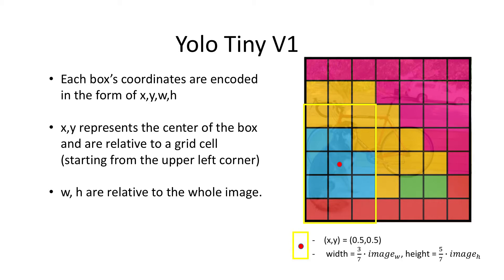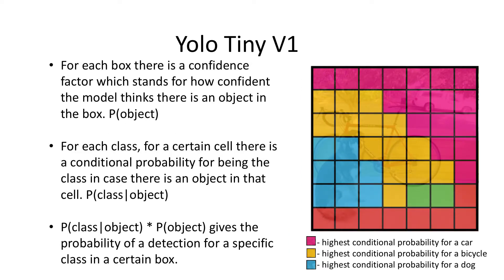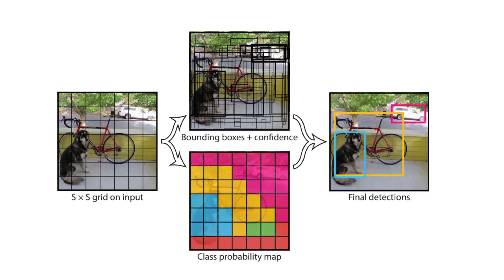For the ROI you get XY, W and H. XY is the center of the ROI, and W and H are the width and the height of the box. Later on you have the confidence — what is the confidence that there is an object in this region, in this 7 by 7 grid. As you can see here, the input is divided into a grid and you get the ROI and the confidence of the class probability.